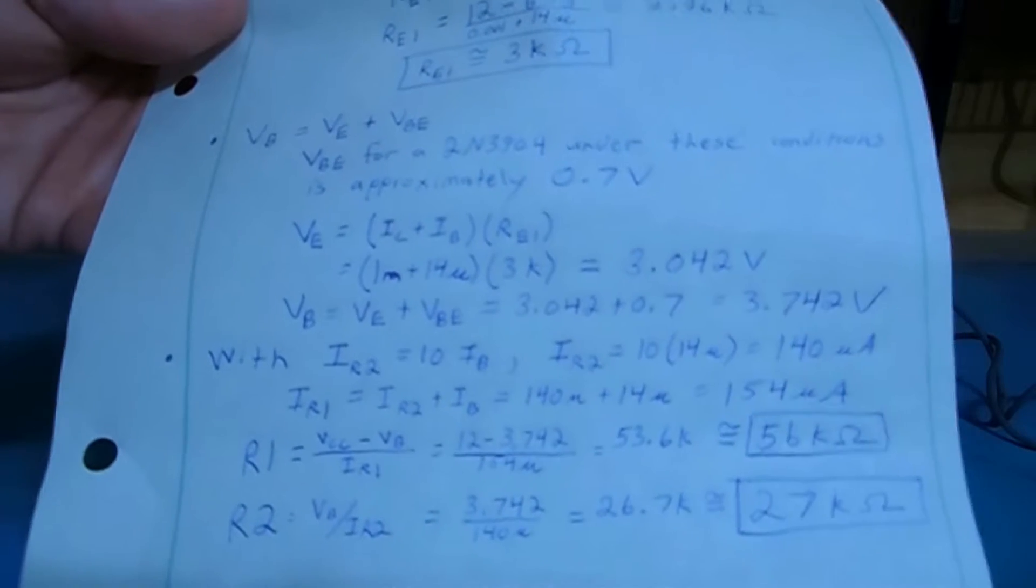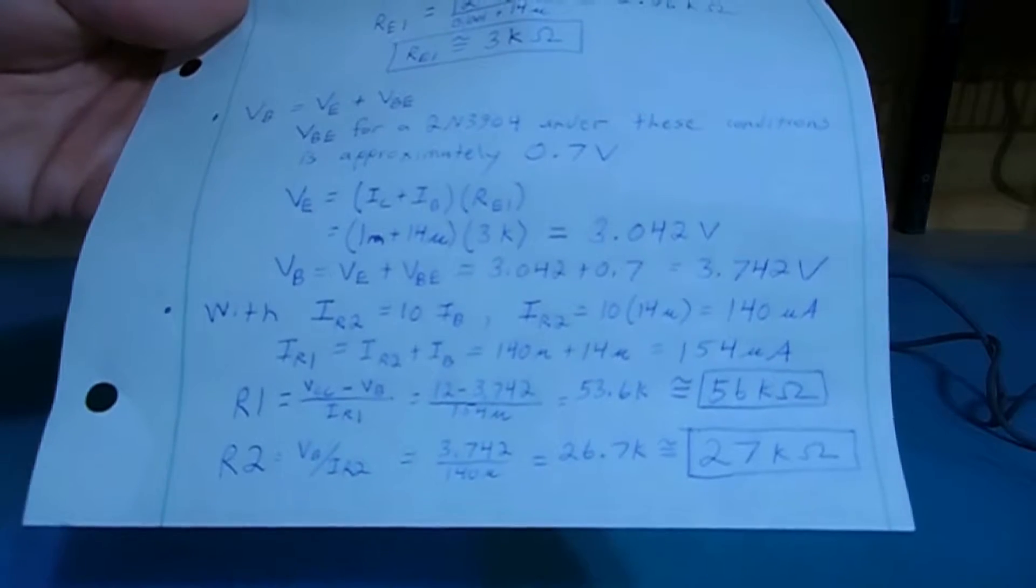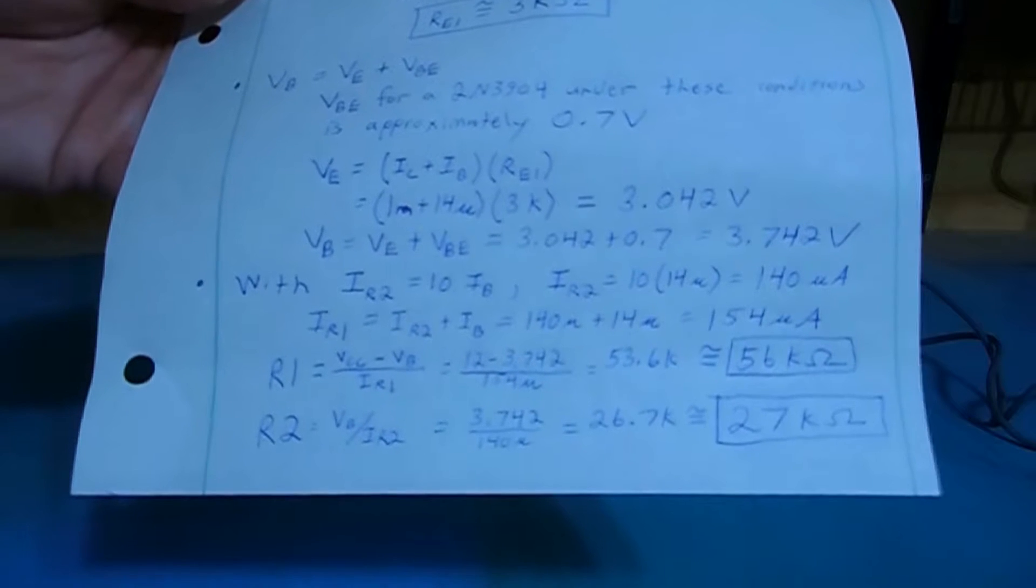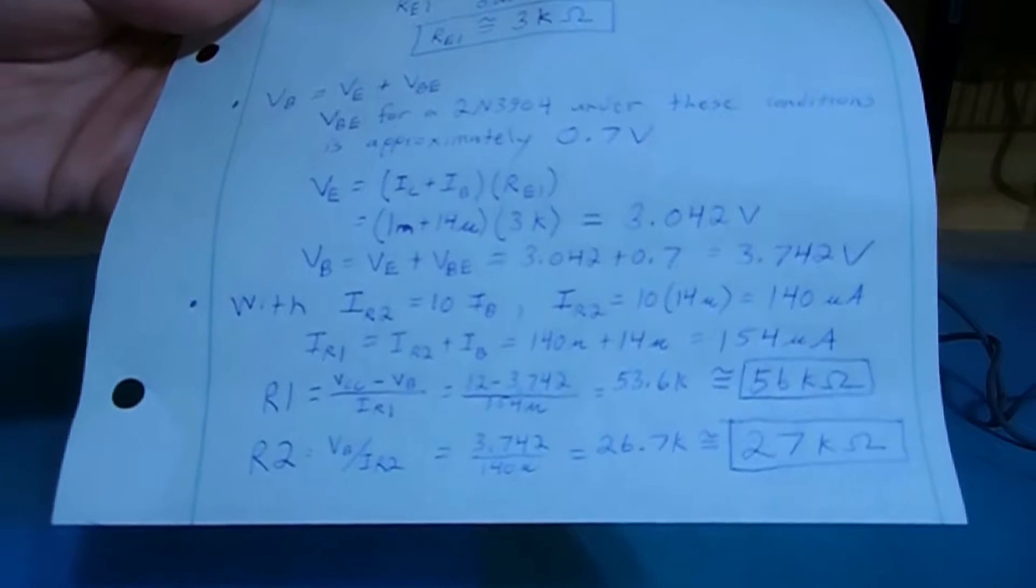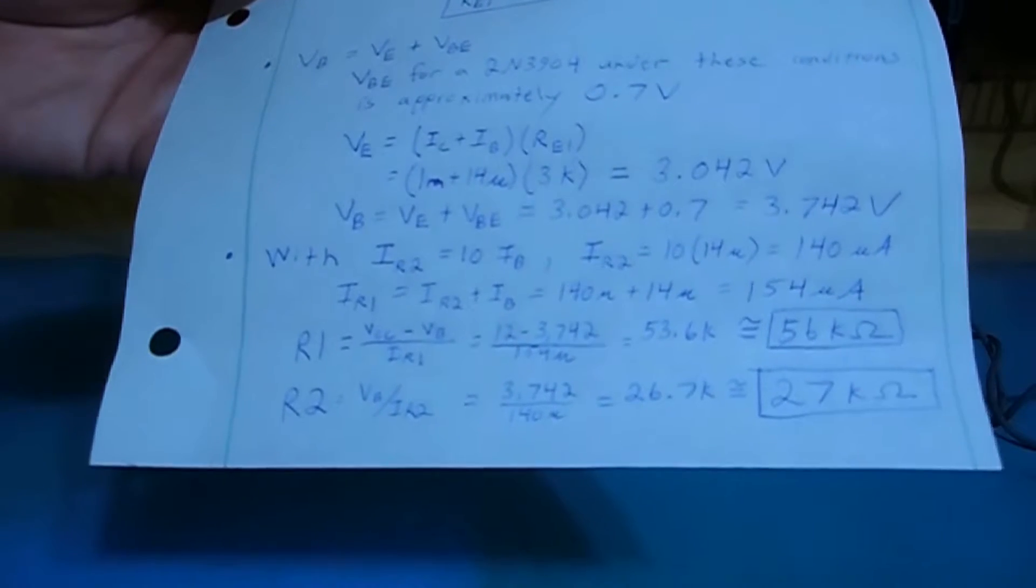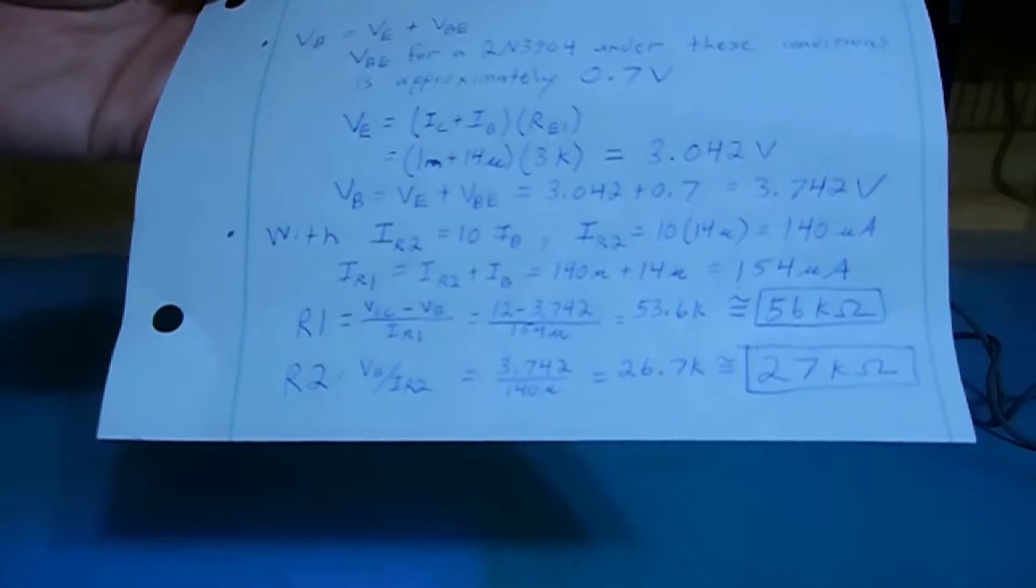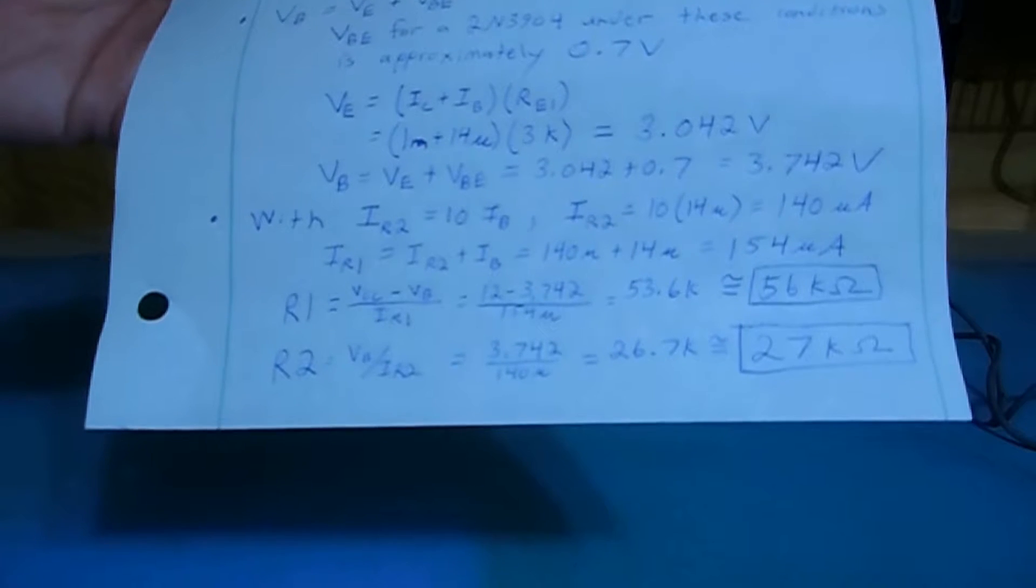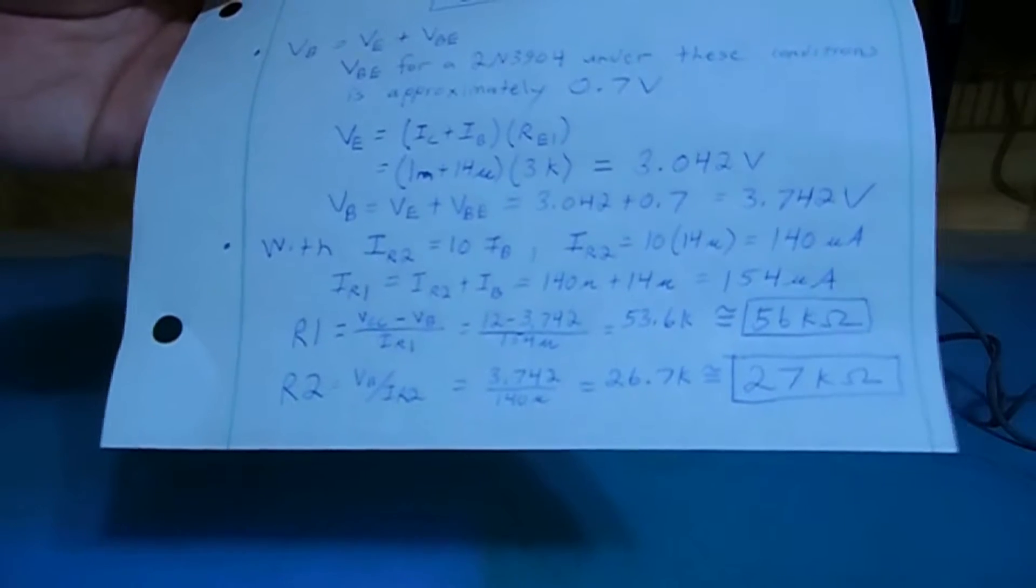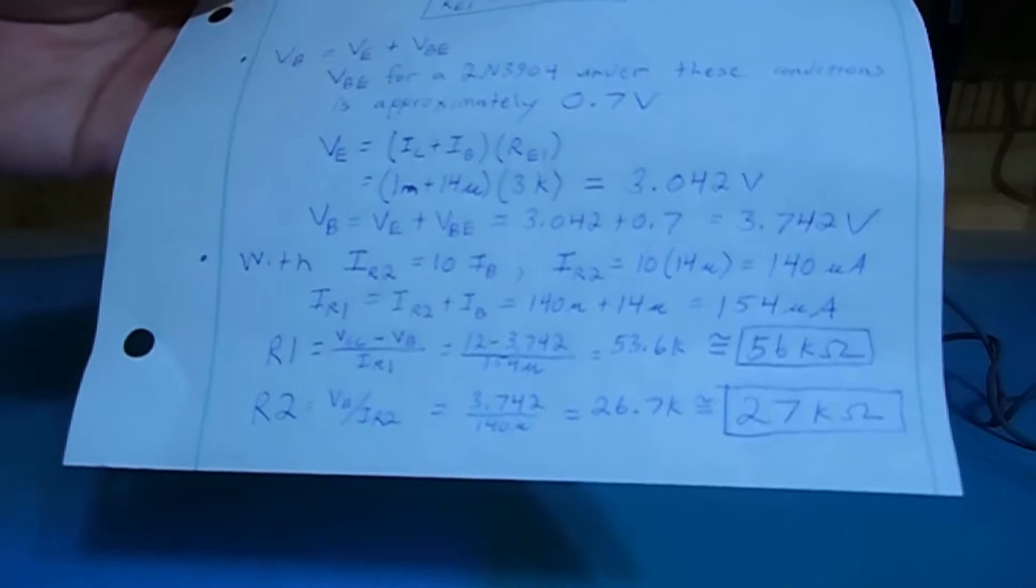And then using our assumption that we wanted 10 times the base current flowing through our divider resistors. We now know from that that we have 12 volts minus our 3.7 volts across the top resistor R1, divide that by our 140 microamps, which is 10 times our base current, 140 microamps plus our 14 that branches off to flow through the base terminal. So we have a total of 154 microamps flowing through that top resistor. That gives us 56,000 ohms.